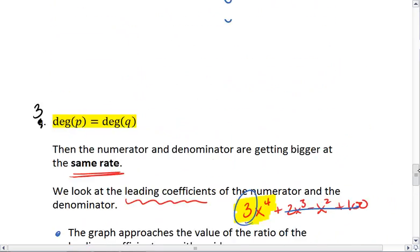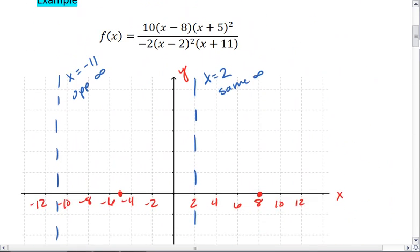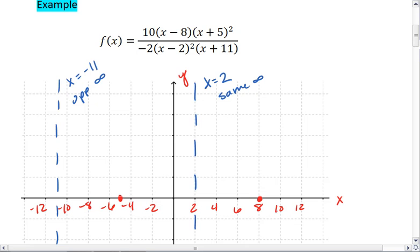Hopefully that part made sense. We're going to go back up to our sketch. We already know that we will have a horizontal asymptote at y equals negative 5.